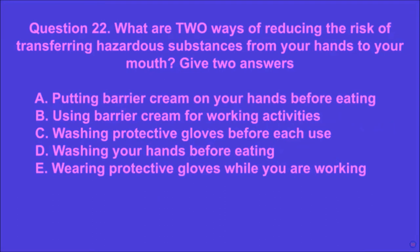Question 22: What are two ways of reducing the risk of transferring hazardous substances from your hands to your mouth? Give two answers. A: putting barrier cream on your hands before eating, B: using barrier cream for working activities, C: washing protective gloves before each use, D: washing your hands before eating, E: wearing protective gloves while working. D and E are the correct answers.